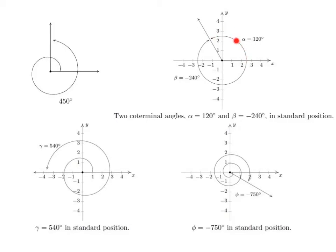Now if you have two angles that have the same terminal side, they're called co-terminal angles, so these two are co-terminal, they're drawn in standard position. And here we have 540 degrees, here we have negative 750 degrees, again, standard position.